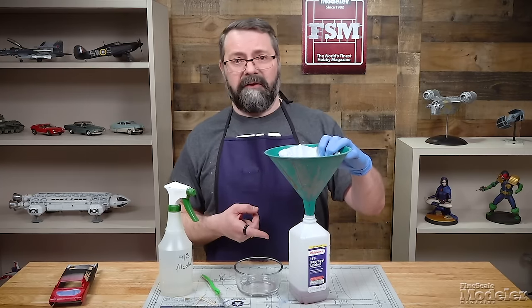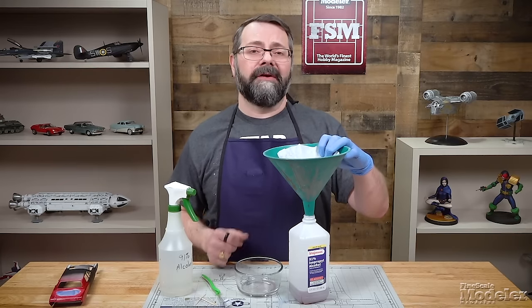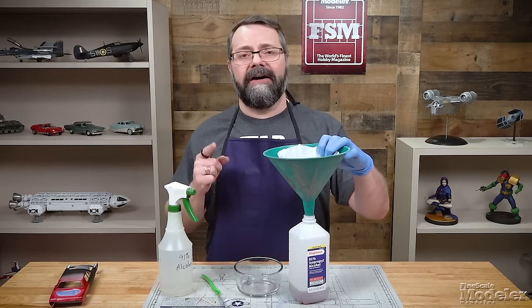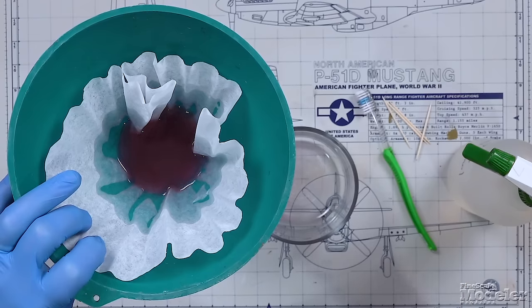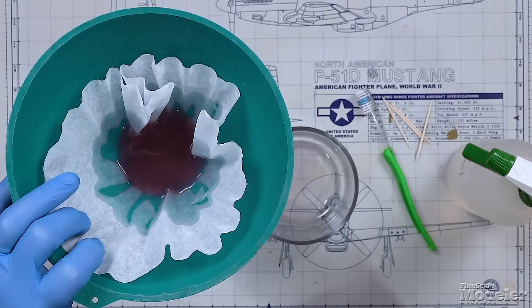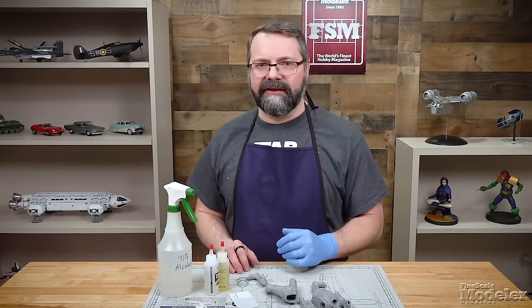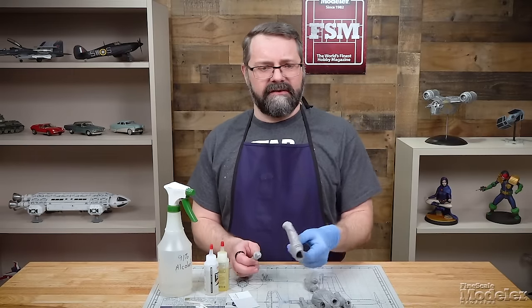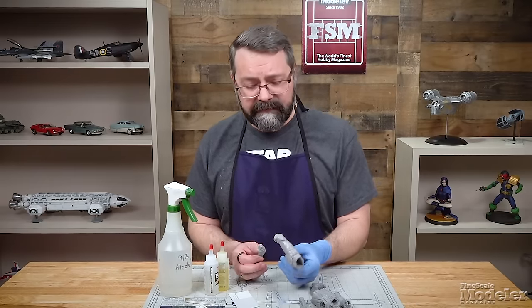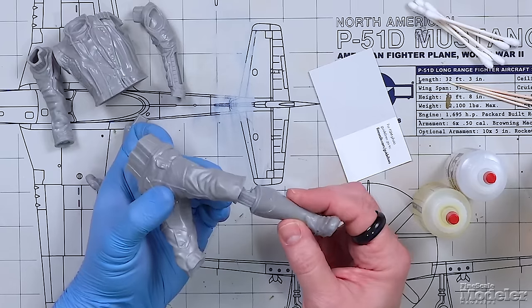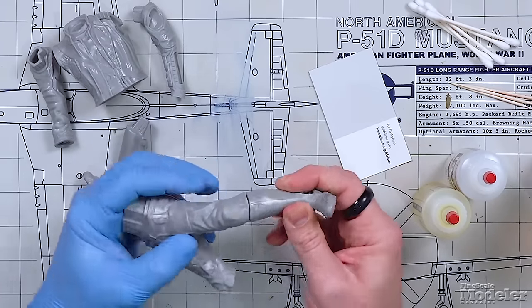While this is doing its job, we'll go ahead and talk about how to use isopropyl alcohol to remove uncured epoxy. So let's say you're building a figure, whether it be resin or vinyl or metal, and you're using epoxy to hold the parts together.